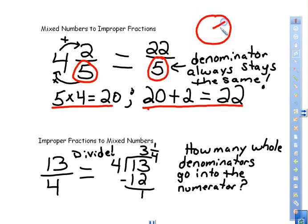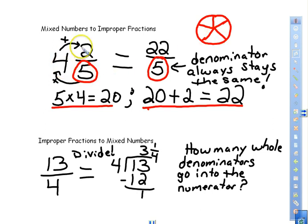You can think of it like a pizza: if you've got five different slices, those slices are never going to change — you'll always have five of them. For every one whole pizza there are five slices, so four whole pizzas gives us 20 slices total. That's why we take five times four to get 20, and then two remaining slices are still left over, giving us 22 total slices out of five.